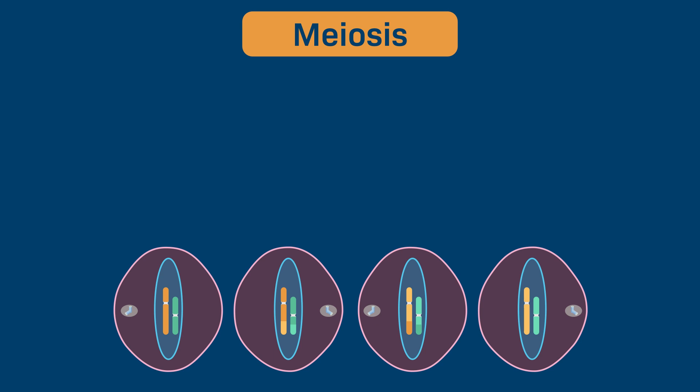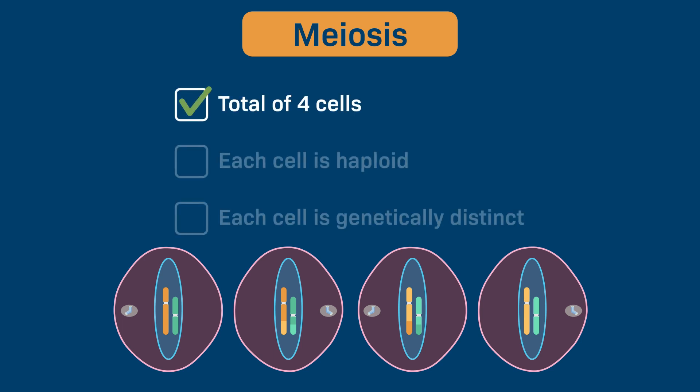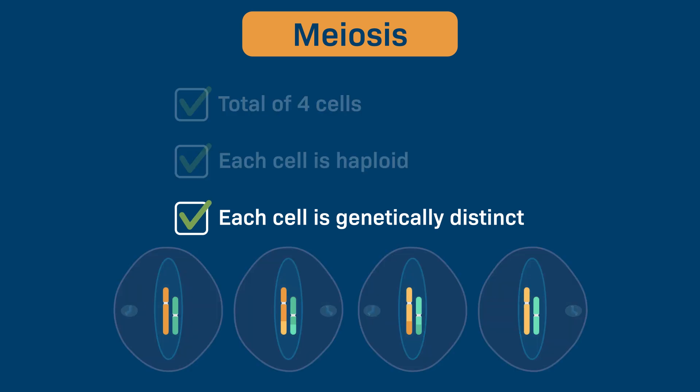The end result of meiosis is that four cells have been produced. Each of these cells is haploid, and each cell is genetically distinct, with its own unique combination of genes.